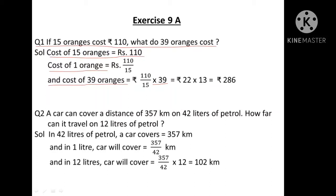Now, 39 and 15 can be cancelled by 3, giving 13 and 5. Then 110 and 5 simplify further. So 22 multiplied by 13 gives rupees 286, which is the answer.